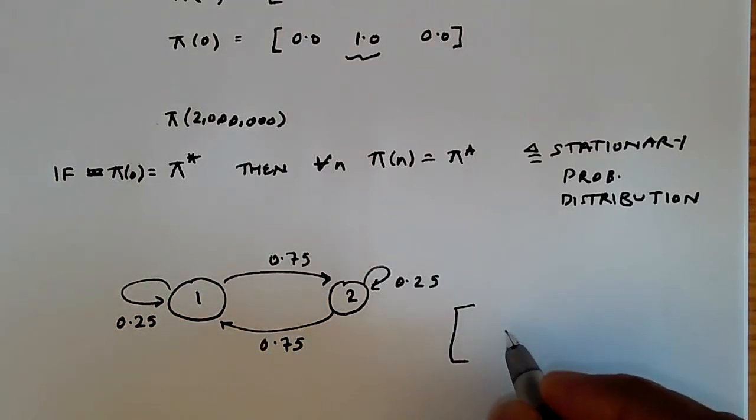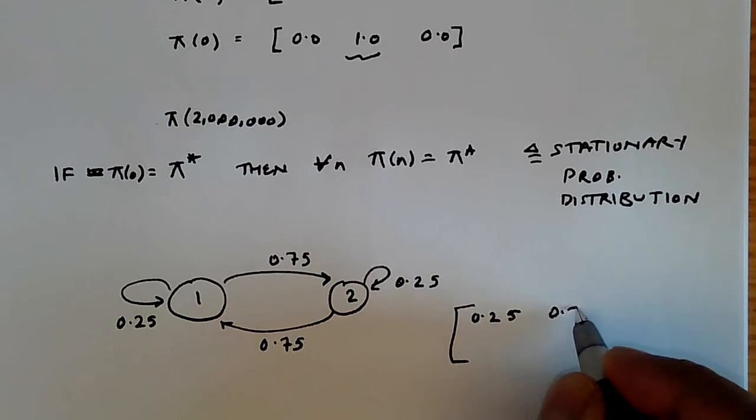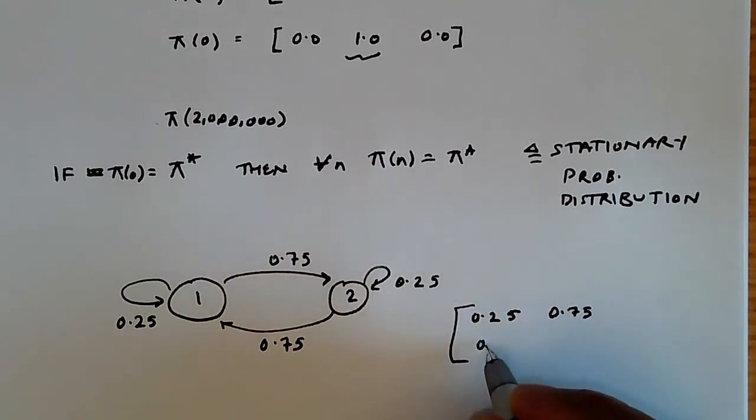And this, of course, corresponds to the transition matrix. P(1,1) is 0.25, P(1,2) is 0.75, and symmetrically we have P(2,1) and P(2,2).